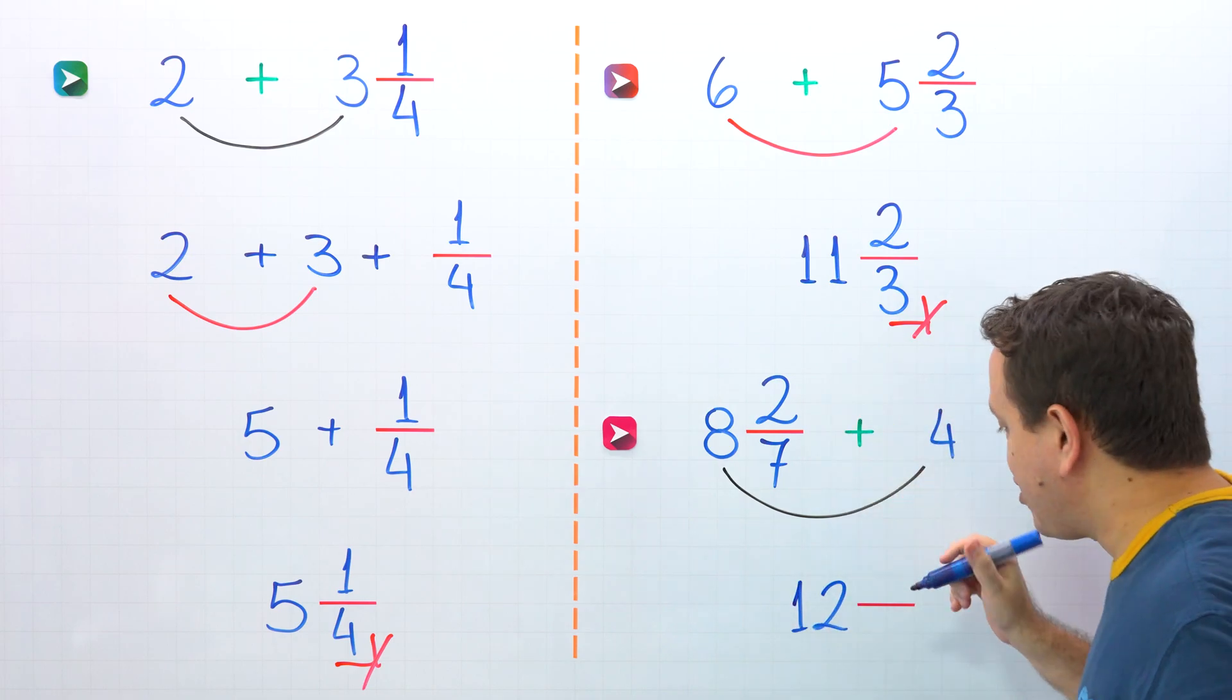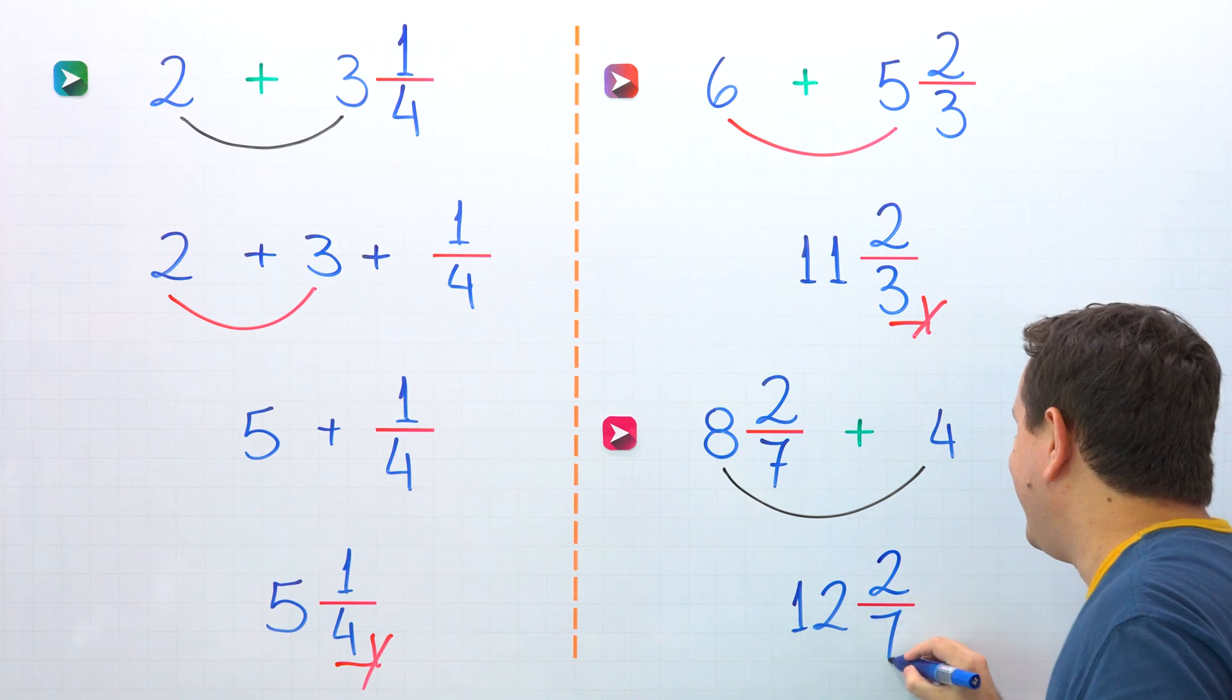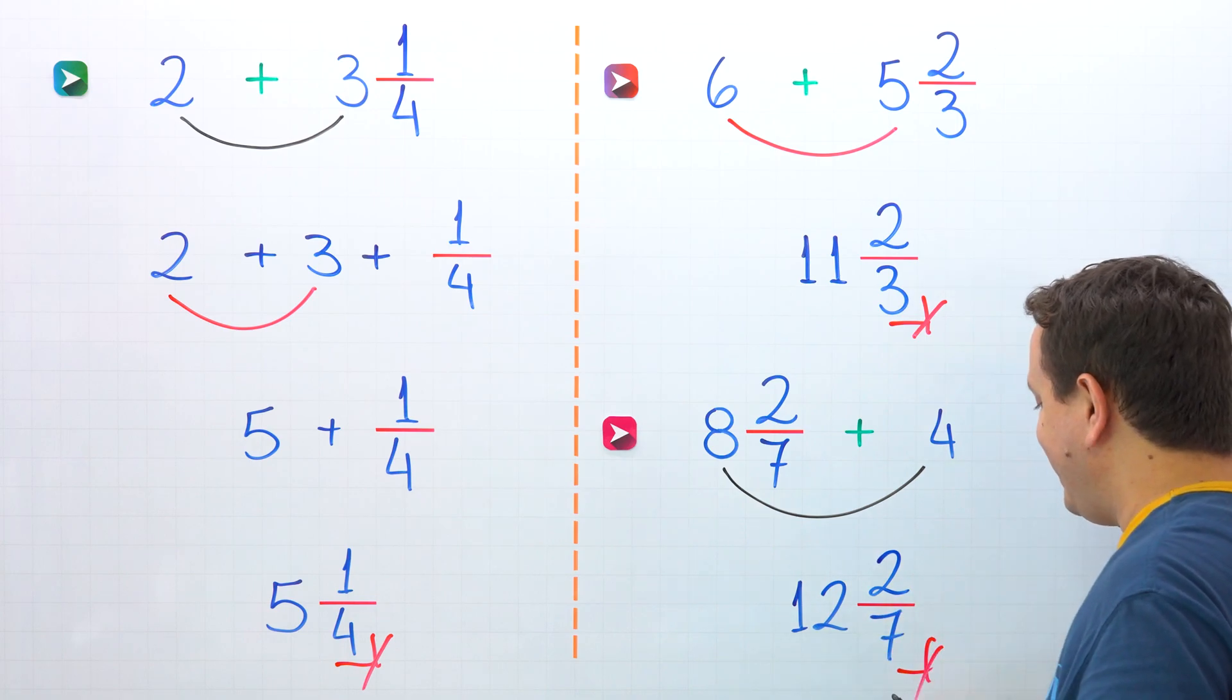Finally, we'll copy the fraction, and the fraction is 2 sevenths. The answer is 12 and 2 sevenths.